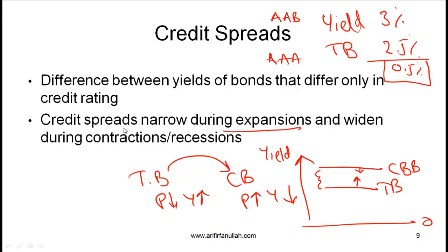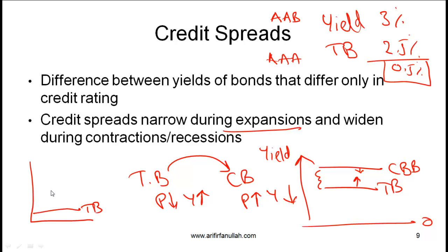That explains why credit spreads narrow during expansions. Taking the opposite scenario during a recession, this gap widens. During a recession, lots of money flows into Treasury bills — the price goes up and the yield comes down. That explains why the yield on T-bills in the US is currently so low given the economic situation. Since money is leaving the corporate market, the yield on corporate bonds goes up, so the spread or difference between the two widens.